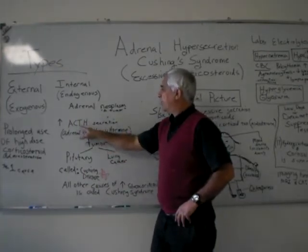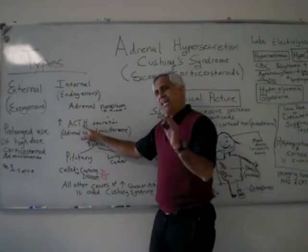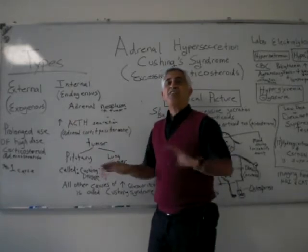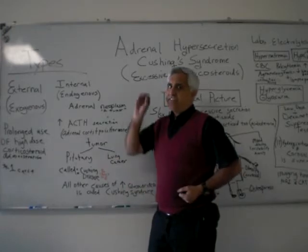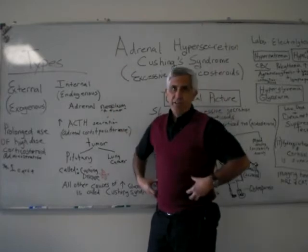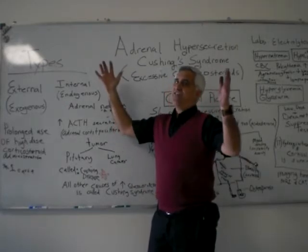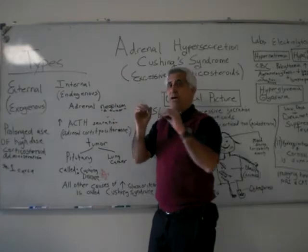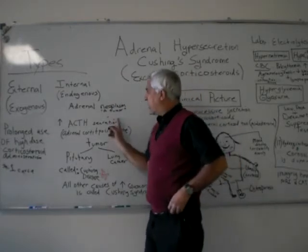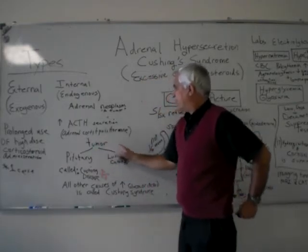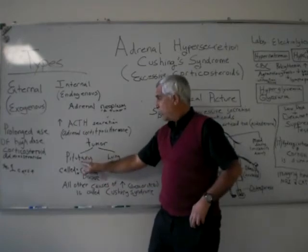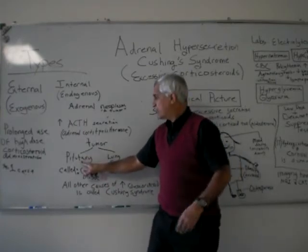ACTH — increased ACTH — from the pituitary gland rules the activity of the adrenal glands. If ACTH is in mass amounts, there is mass activity by the adrenal glands. If ACTH is little, you'll have little activity by the adrenal glands. You can have a pituitary tumor, and that will cause hypersecretion of ACTH.